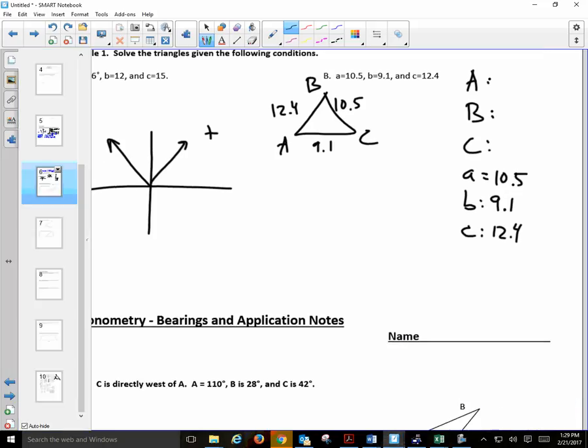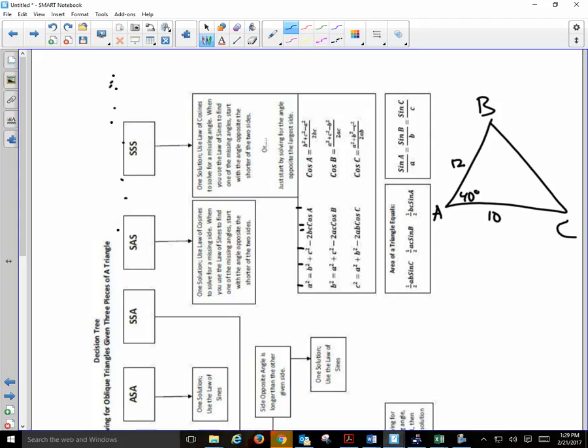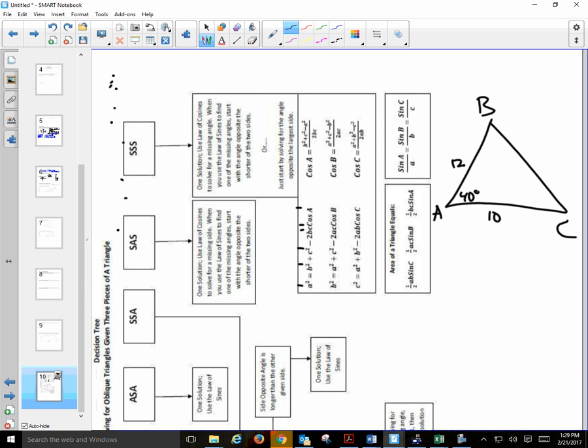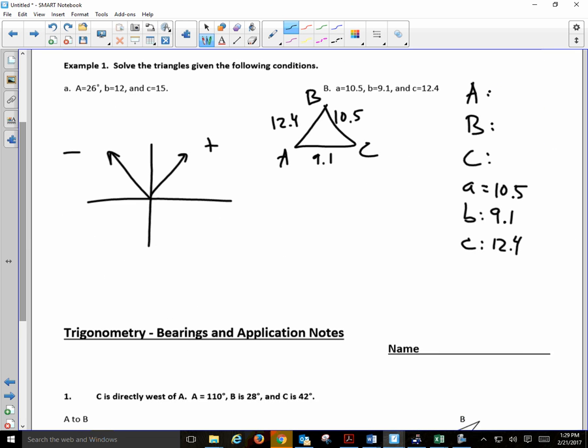So this one's easy. If you just look at the decision tree, it says, side, side, side, one solution. Use the law of cosines to solve. Forget that part. Just go here. It says, start by solving for the angle opposite the largest side. So we're going to start by finding the angle opposite the largest side. Which angle would that be in this scenario? Angle C. So our formula will be C squared is equal to A squared plus B squared minus 2AB times the cosine of angle C. And again, in this situation, it's large C that we don't know. So I have 12.4 squared is equal to 10.5 squared plus 9.1 squared minus 2 times 10.5 times 9.1 times the cosine of angle C.